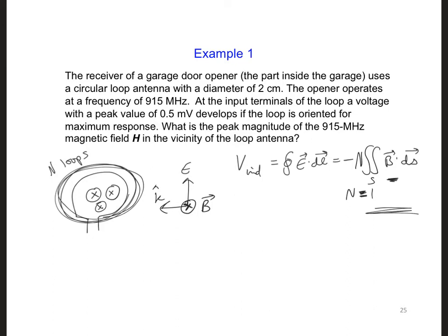So under what conditions can we assume the B field is uniform over this loop? Well, if the loop is electrically small, so I can say here, if the diameter, diameter, is a lot smaller than a wavelength, we can say it's electrically small.